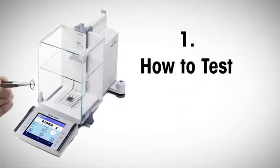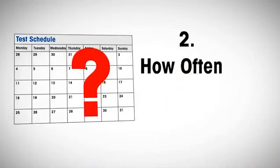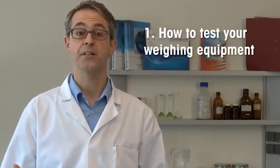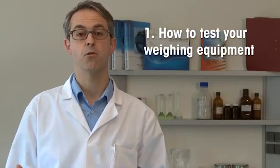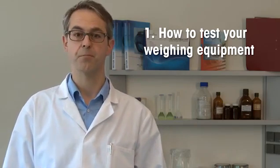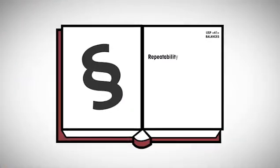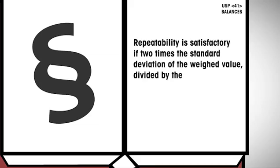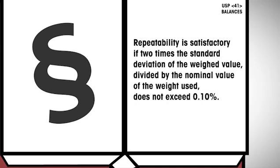How to test the weighing equipment, how often to test it, and how to avoid weighing errors. Probably you are already acquainted with the repeatability test of the old General Chapter 41 weights and balances. Here comes the new chapter with a few small changes. Repeatability is satisfactory if two times the standard deviation of the weighted value, divided by the nominal value of the weight used, does not exceed 0.10%.